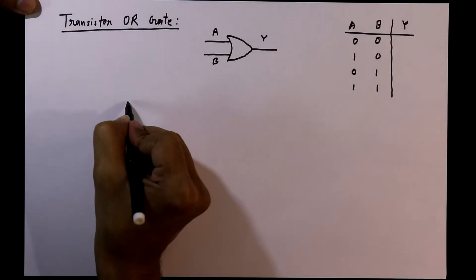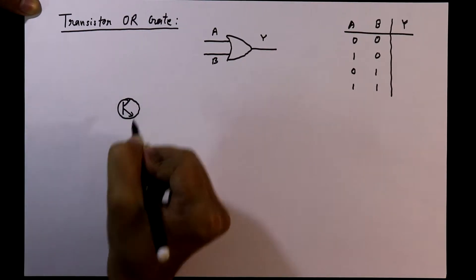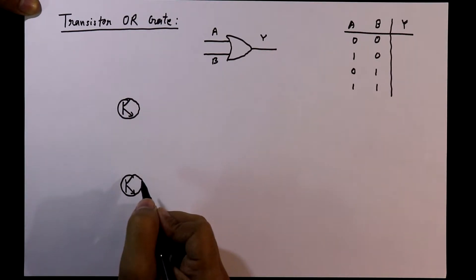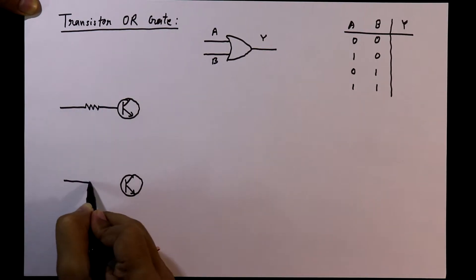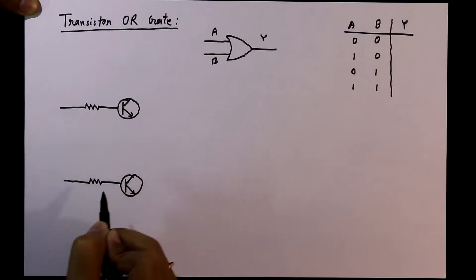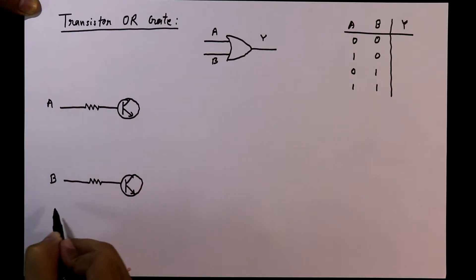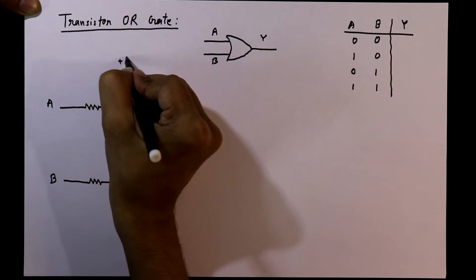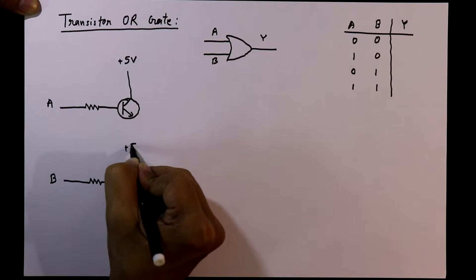As we are designing a two-input OR gate, we need two transistors. These are NPN transistors. We have to connect a base resistor to each and here we will provide the inputs A and B. The collector of each transistor is connected to plus 5V.